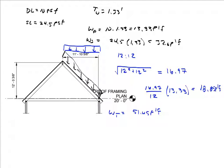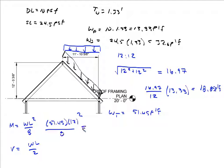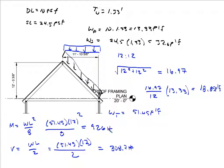Now we find the maximum moment and maximum shear. The rafter is a simply supported beam, so we use M = wL²/8 and V = wL/2. The length, as a horizontal projection, is 12 feet. Plugging in the numbers, the maximum shear is 308.7 pounds and the maximum moment is 926 pound-feet.